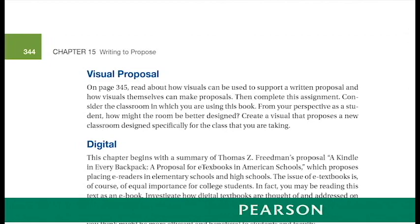Thus, what I want students to see is that the objective of the assignment is to propose a new design for the space, not an entirely new space. This clarification, I find, is also useful in helping students understand that part of how I will assess their visual proposals will be based on the ability of the audience — both me and other students — to identify the proposed situation within the current situation and to see the alterations the proposal makes. That is, the proposal must account for the current situation and the current space.